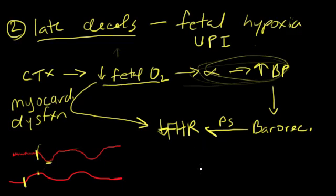It's worth taking some time thinking about this physiology instead of just memorizing that late d-cells are associated with fetal hypoxia. Knowing that earlies are head compression, lates are utero-placental insufficiency, and variables are cord compression will get you the right answers on the test.